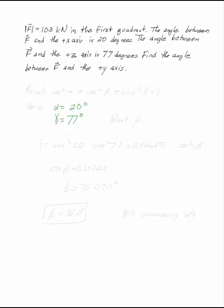Find the angle between f and the positive y-axis. We want to find beta. Recall cosine squared alpha plus cosine squared beta plus cosine squared gamma equals 1.